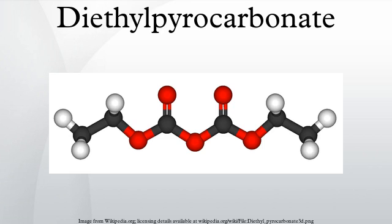Diethylpyrocarbonate, also called diethyl decarbonate, is used in the laboratory to inactivate RNAse enzymes in water and on laboratory utensils. It does so by the covalent modification of histidine, lysine, cystine, and tyrosine residues.